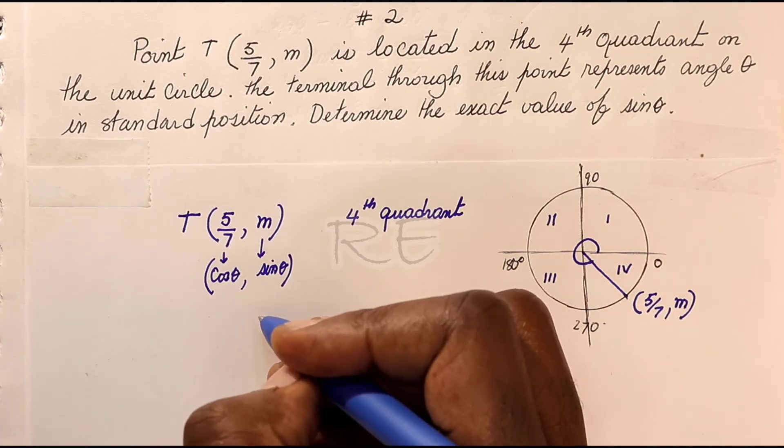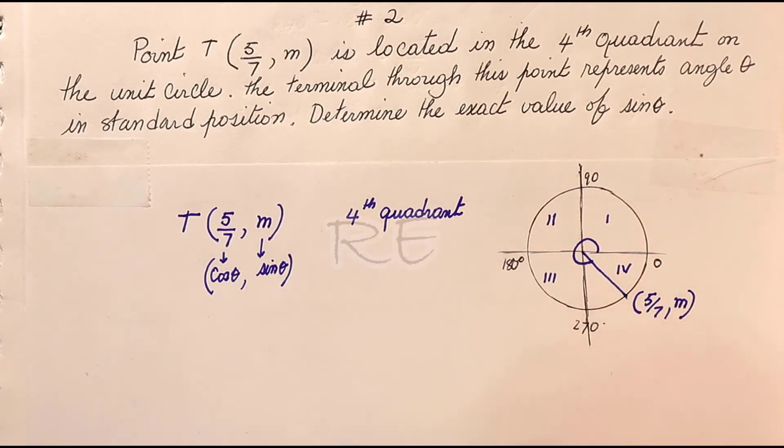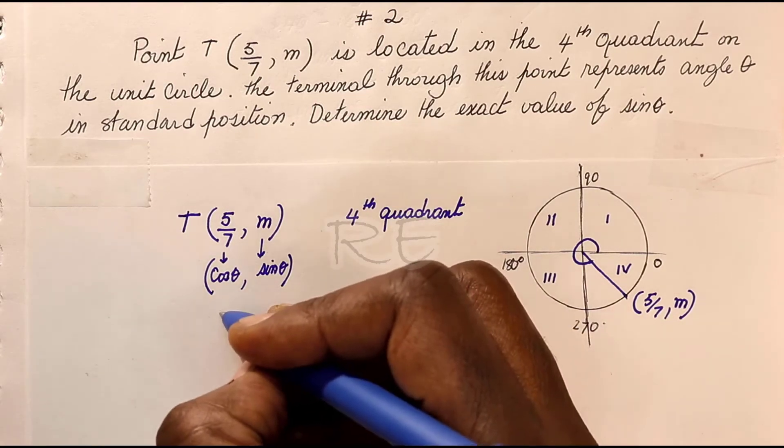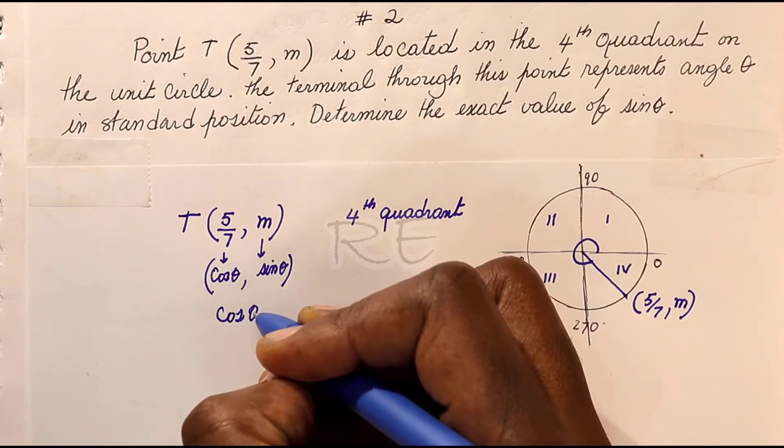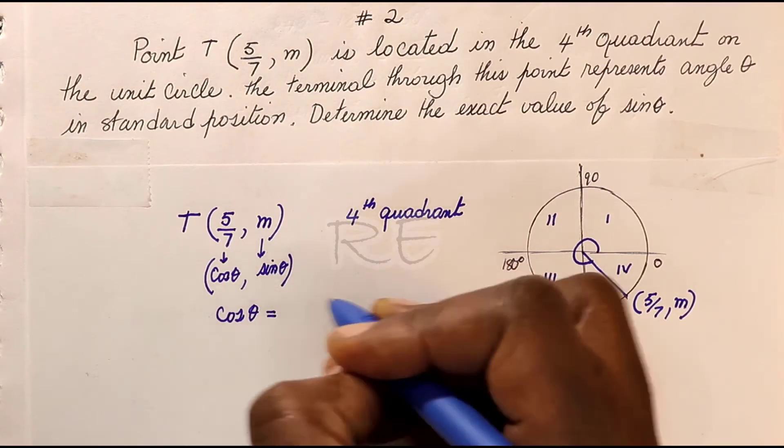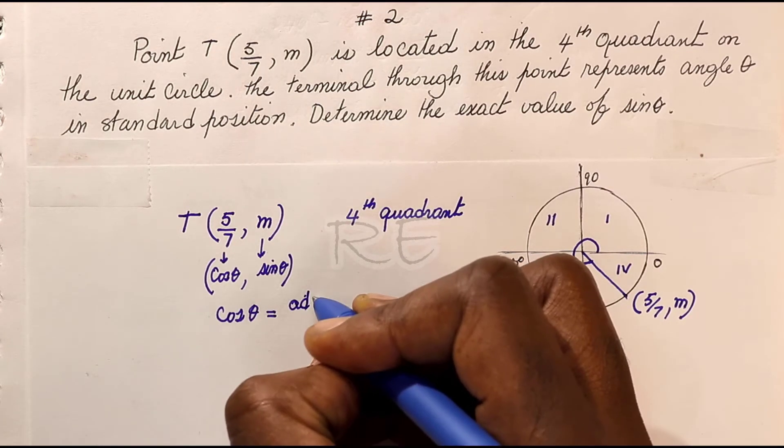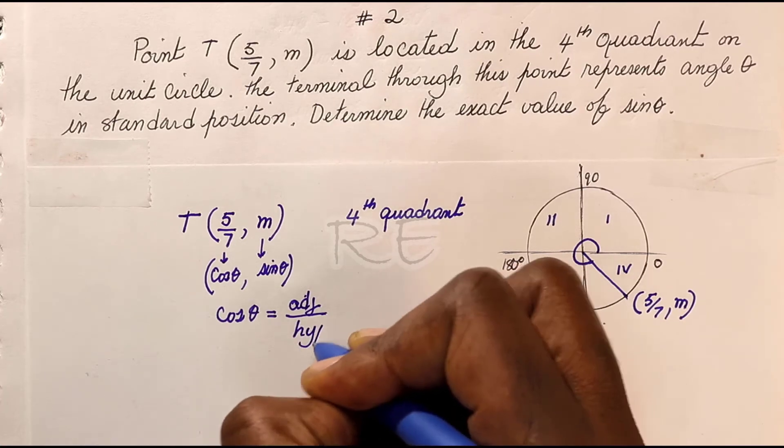Another relationship for cosine: cosine of any angle theta in a right triangle will be equal to adjacent over hypotenuse.